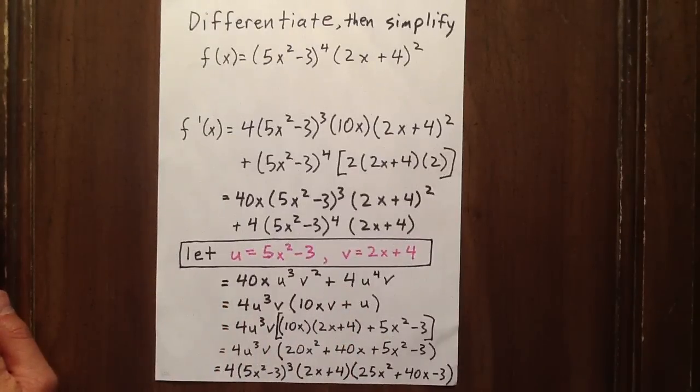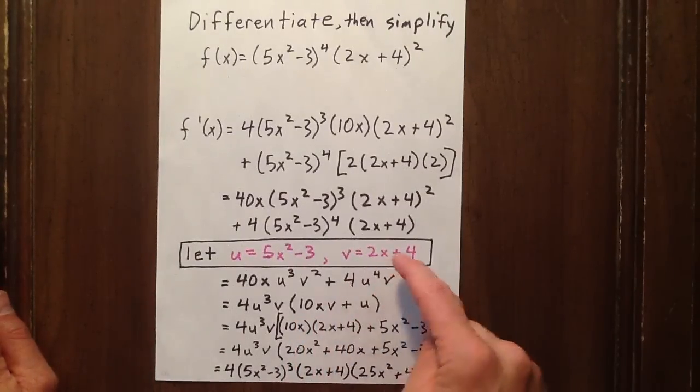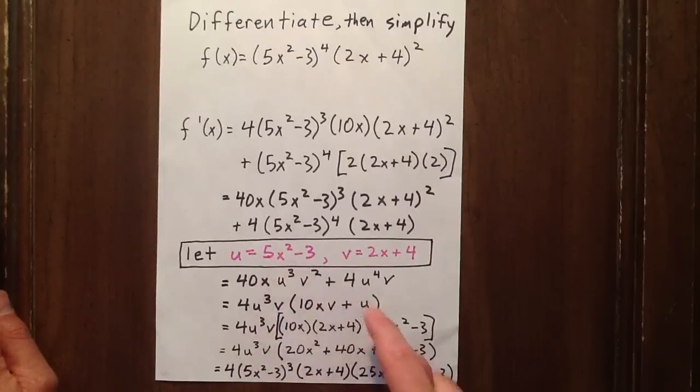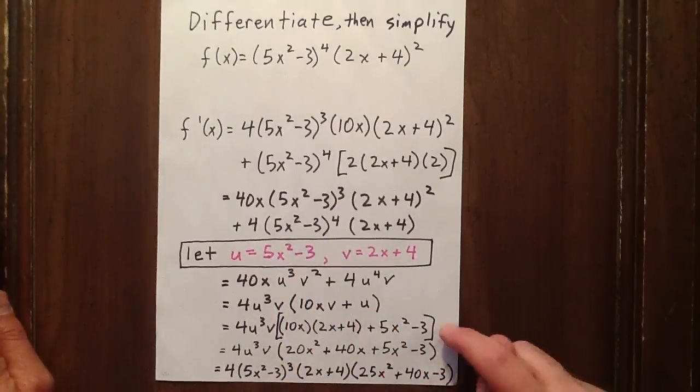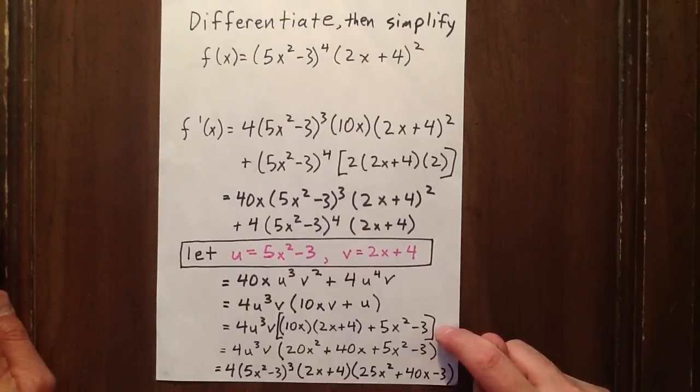We can common factor u cubed v out of that, and we're left with 10x v plus u. At this point, we substitute the v and the u back in, and we get this as our second factor.